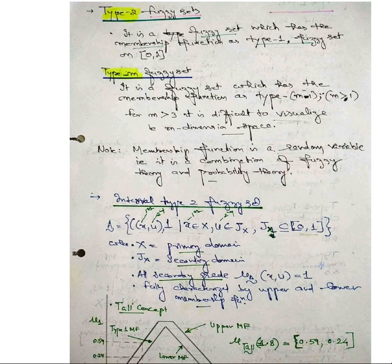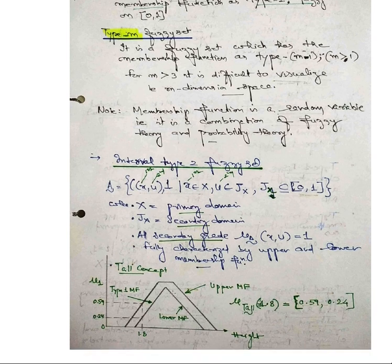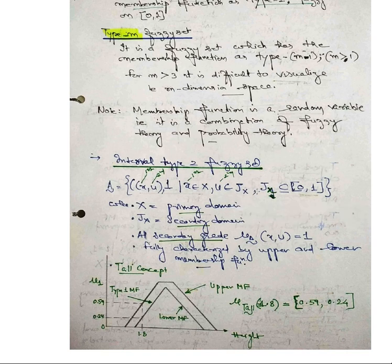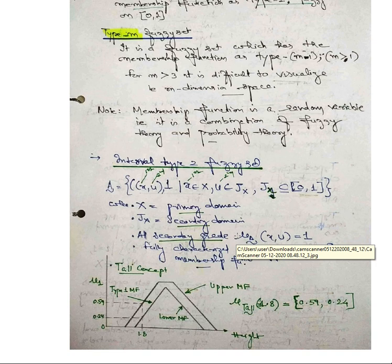When we talk about the secondary domain, we represent it in terms of U(X). The fuzzy set is fully characterized by the upper and lower membership functions. If you take the lower and upper part, then X and U are coming together. For a Type 1 set you write X such that X belongs to capital X, in the bracket [0,1]. But since it is Type 2, we incorporate the second fuzzy: (X, U, 1) such that X belongs to X and U belongs to J(X), where J(X) is a subset of [0,1].